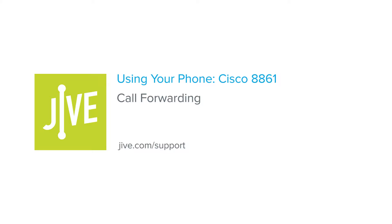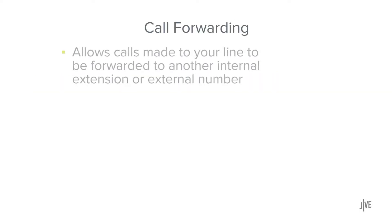In this video, you will learn how to enable and disable call forwarding on a Cisco 8861 phone. Call forwarding allows calls made to your line to be forwarded to another internal extension or external number.